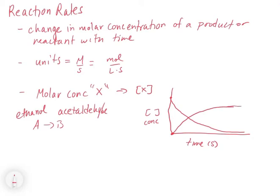You'll notice that these graphs are just mirror images of each other, which makes sense because as I take a little bit of A away, by stoichiometry I have to make exactly the same amount of B. So if I take one mole of A away, I have to make one mole of B. That's why these things look like a mirror image. The trace for the concentration of B increases while the trace for the concentration of A decreases.